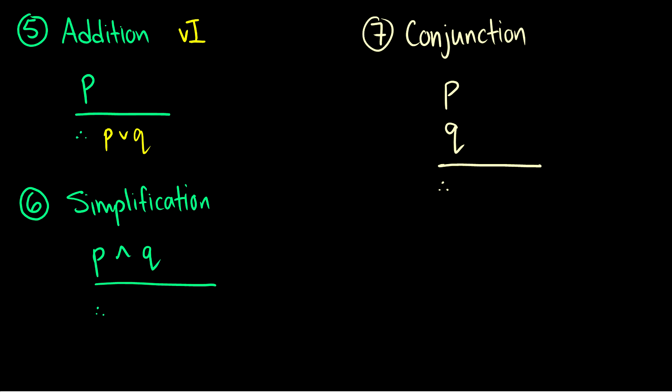Simplification. P and Q. Well, if P and Q is true, then P is true and Q is true. Therefore, P and therefore Q. Sometimes this is also known as and elimination because you're removing the and from it. So simplification is pretty important.